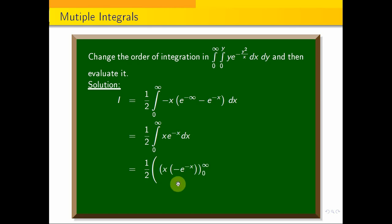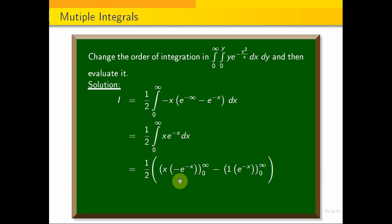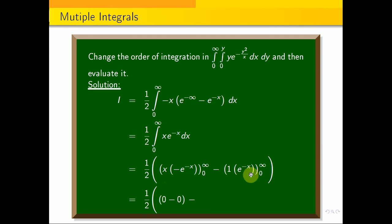So, applying integration by parts: x into minus e power minus x, limit zero to infinity, minus the integral of differentiate x (which is 1) times minus e power minus x. Adding the signs gives e power minus x, limit zero to infinity. Applying upper limit: e power minus infinity is zero. Upper limit gives zero, lower limit: minus e power zero is minus one. So this is minus times minus, giving plus one. Then one times half equals one half.